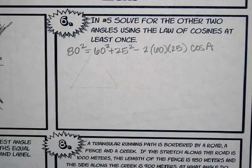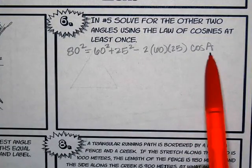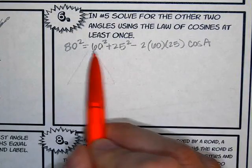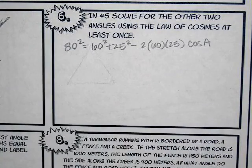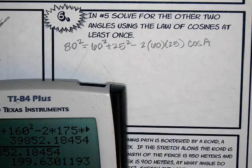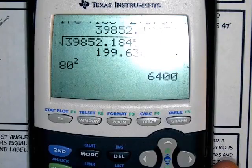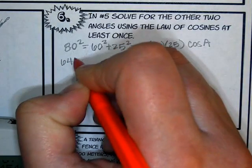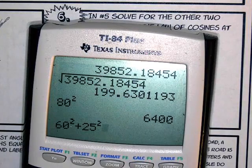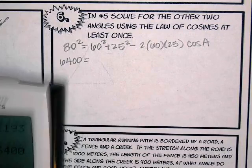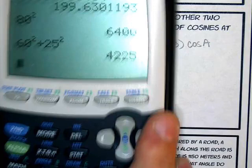What I do is as much math as I can without getting decimals. I can figure out what the left side is, what the right sum is, and the coefficient of cos. So 80 squared is 6,400. 60 squared plus 25 squared is 4,225. And then 2 times 60 times 25 is 3,000 even.